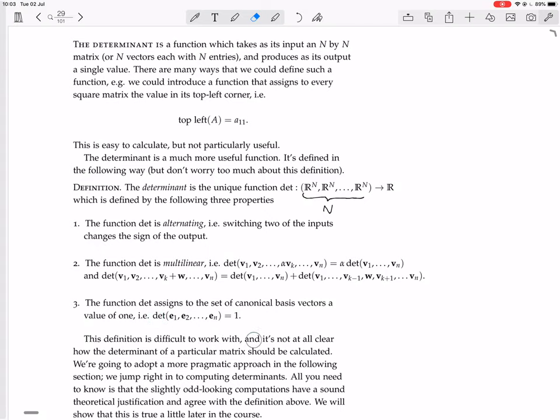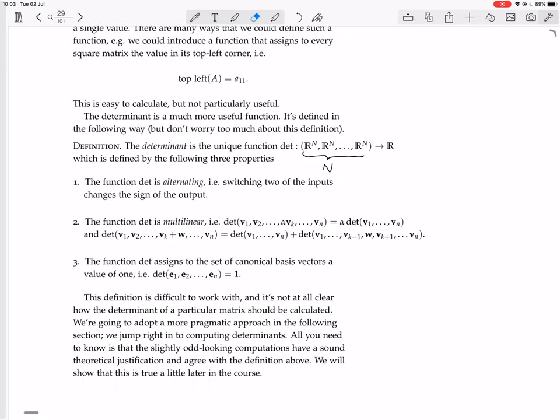This definition is difficult to work with and it's not at all clear how the determinant of a particular matrix should be calculated. This just says that it's a unique function, but nothing here shows there's reason for us to believe that there is such a unique function, though there is, it turns out. It doesn't tell us how we would actually calculate the determinant, so we're going to adopt a more pragmatic approach in the following section and jump right into computing determinants. All you need to know is that the slightly odd-looking computations have a sound theoretical justification and agree with the definition above. We will show that this is true a little later in the course.